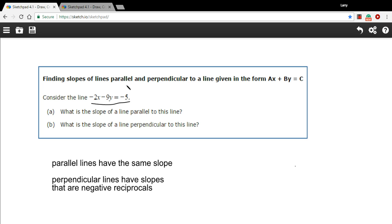The thing that you need to know is that when lines are parallel, they have the same slope. And when lines are perpendicular, they have slopes that are negative reciprocals. So you would express the slope as a fraction and then flip it upside down and change the sign. If it's negative, make it positive. If it's positive, make it negative.